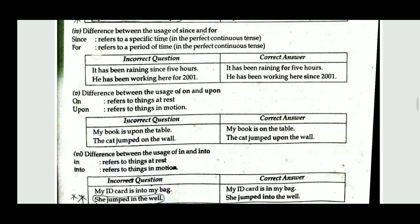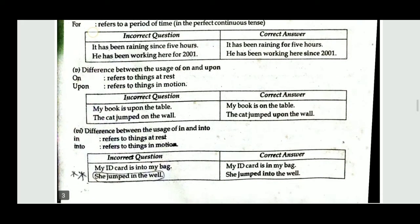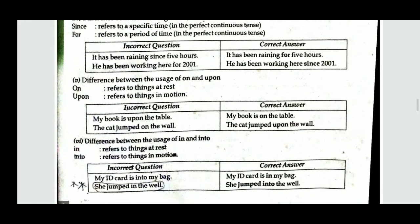Difference between 'in' and 'into': 'In' refers to things at rest; 'into' refers to things in motion. 'My ID card is into my bag' is wrong — the ID card is at rest, so correct is 'My ID card is in my bag.' 'She jumped in the well' is wrong — she is moving, so correct is 'She jumped into the well.'